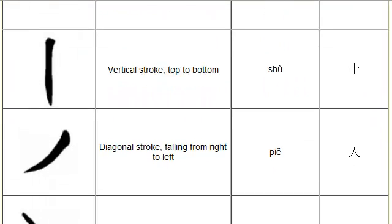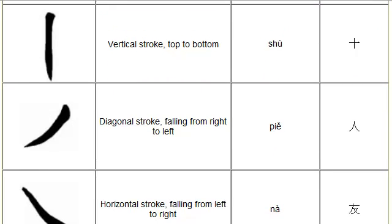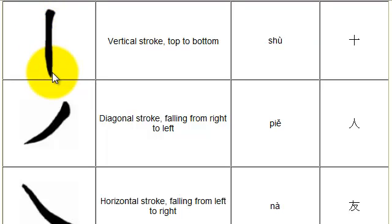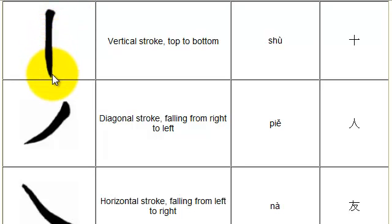Next is shu. Shu in Chinese means vertical. The vertical stroke is drawn from the top to the bottom — put your pen down at the top and draw down to the bottom. Here you can see an example of shu being used in this character, right in the middle.